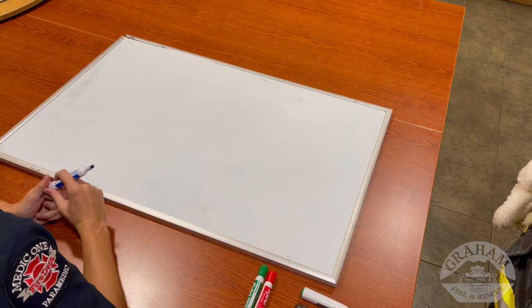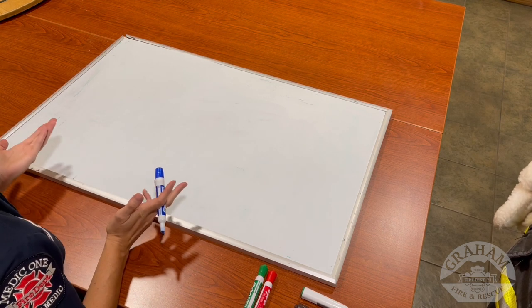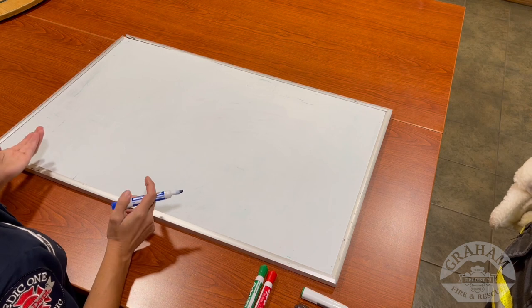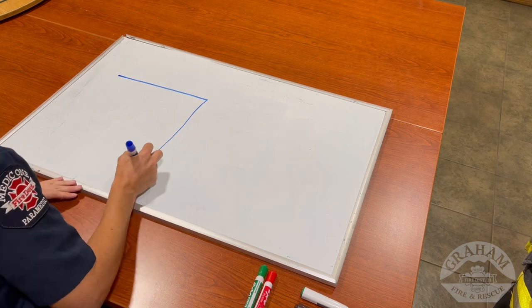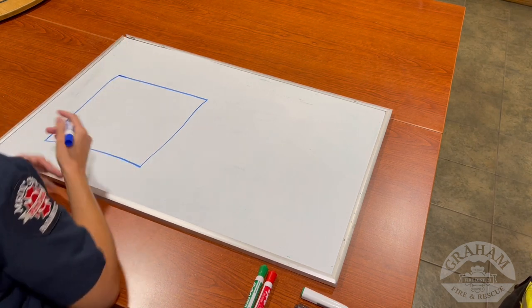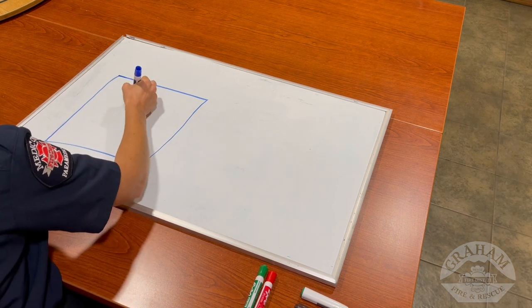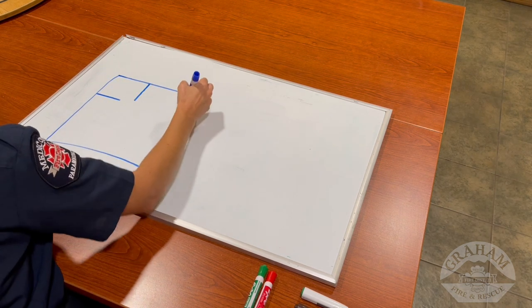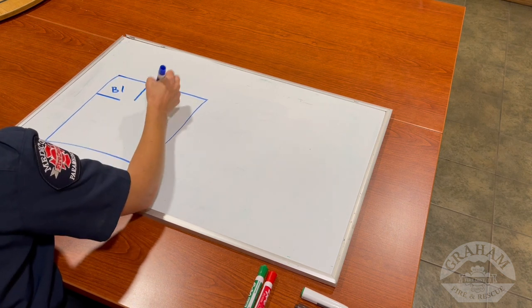Alright, so let's start by drawing a basic map and we'll make it of the fire station, which is pretty much like the second house of all firefighters. So we're gonna start by making a big square. There we go. And then every single house has bedrooms, even the fire stations. So we're gonna start with our bedrooms here. There's bedroom one. And then we'll have a bathroom in between.